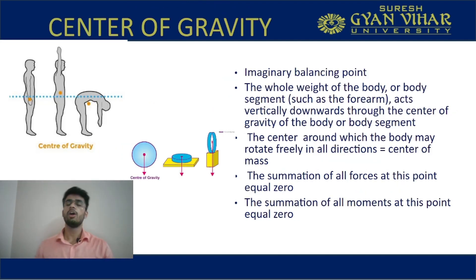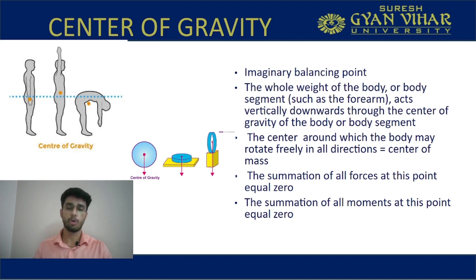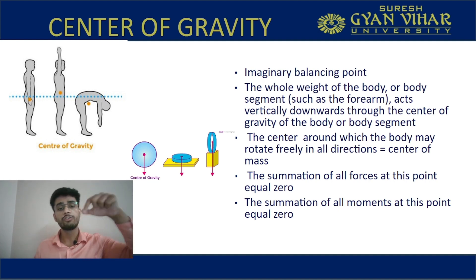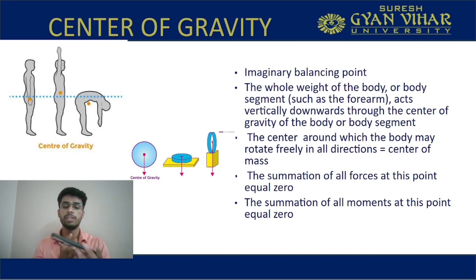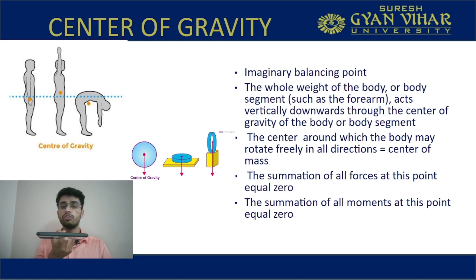Center of gravity — always remember that it is an imaginary balance point. If you need to balance an object, the whole weight is concentrated on this point. For example, see this mobile phone — if I have to balance it, I have to put my finger somewhere in between so that I can balance it. The point on which my finger is located right now is the center of gravity, because this is the point on which I can balance the object.